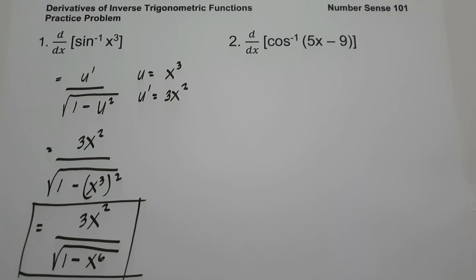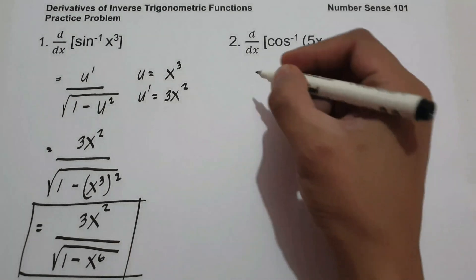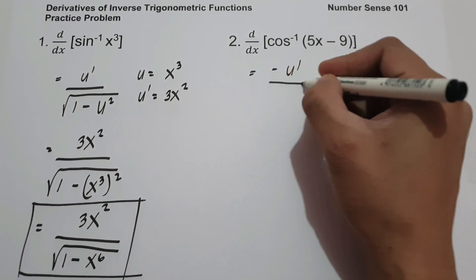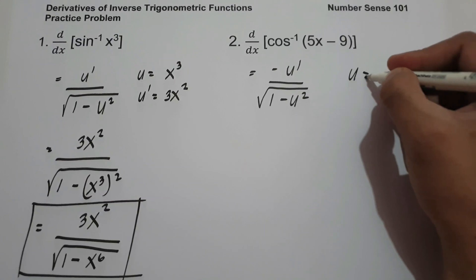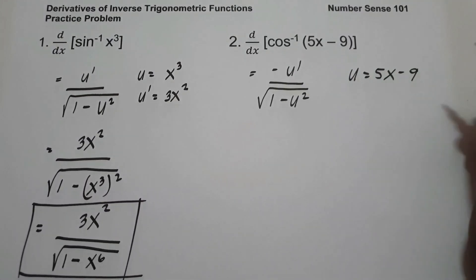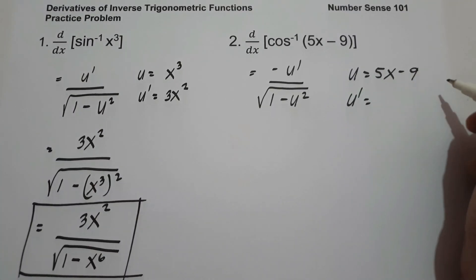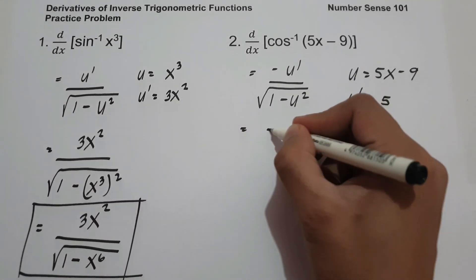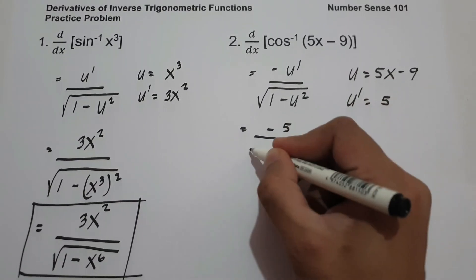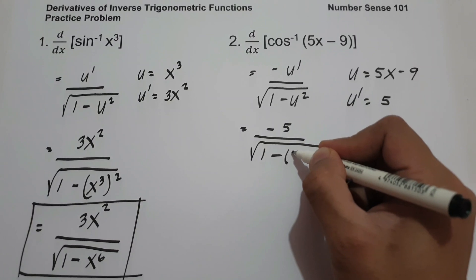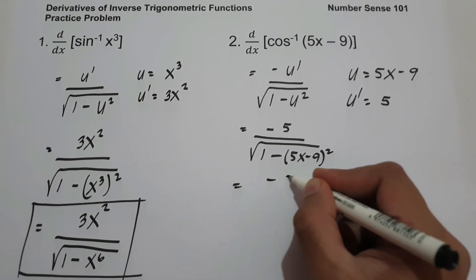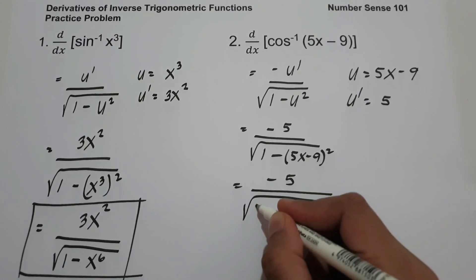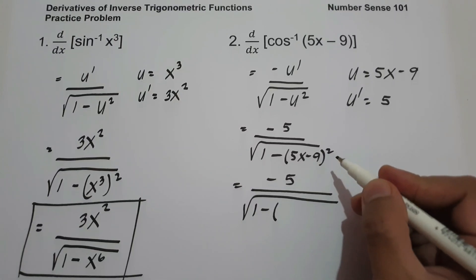On number 2, what is the derivative of arc cosine of 5x minus 9? The derivative of arc cosine is negative u' over square root of 1 minus u squared. So let us have u equal to 5x minus 9, and u' is the derivative of 5x minus 9, which is 5. So we have negative 5 over square root of 1 minus the quantity of 5x minus 9 squared.